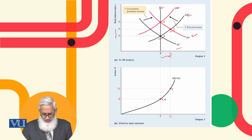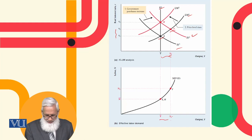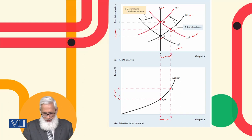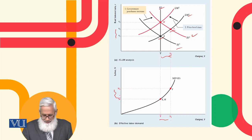With output being higher, the labor demand curve is affected. Higher output means the employment level is going up. So in the short run, output is going up and the real interest rate is also going up.